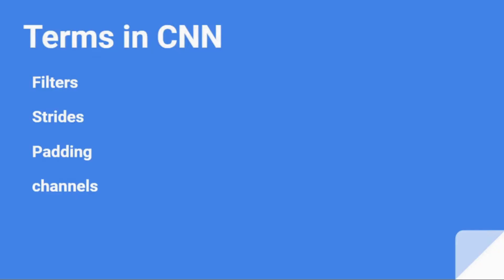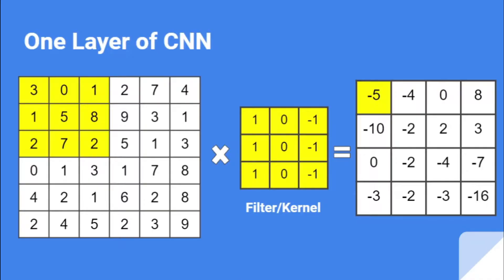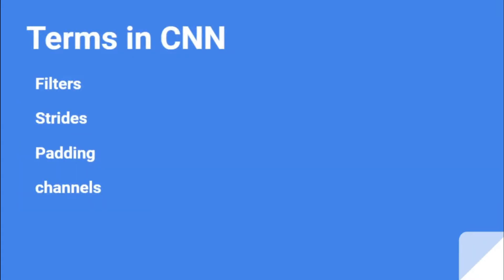Let's first start with filters. I hope you are already familiar with filters — we covered them in the last episode. A filter is basically the weights in CNN. You would be familiar with weights in a neural network — that is the number with which inputs are multiplied. In CNN, the filter is a matrix. In this example, the filter is a 3 by 3 filter with values 1, 0, minus 1, repeated for all three rows.